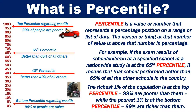The richest 1% of the population is at the top percentile — 99% are poorer than them — while the poorest 1% is at the bottom percentile, and 99% are richer than them.